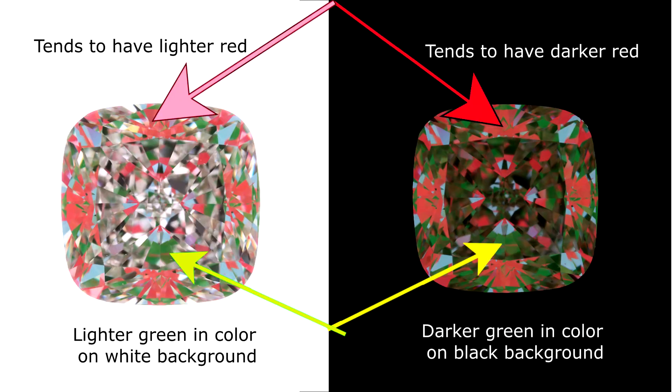Here is another example of a fancy shaped cushion diamond. See the big difference? The diamond looks so much better on a black littered background as it changes the light leakages to look like light return. All these massive light leakages become green which is mistaken for weaker light return.